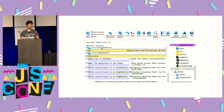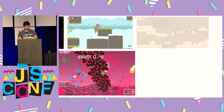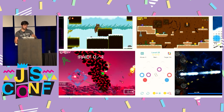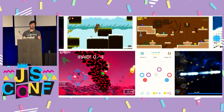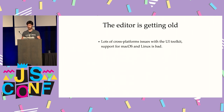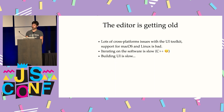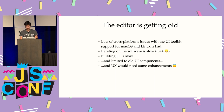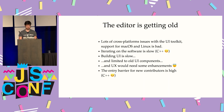It's kind of simple for people who don't know how to program — it's only based on logic, no syntax to learn. A few games have been done with it. Everything was working quite well, and I made the game on the top left with the cat called Little Bub — check it out. But at some point I had issues. The editor was getting quite old; I had lots of cross-platform issues, particularly on macOS and Linux. Iterating on the software was quite slow, C++ UI building was slow and limited, and honestly the UX needed enhancements. The entry barrier for new contributors was quite high with C++.